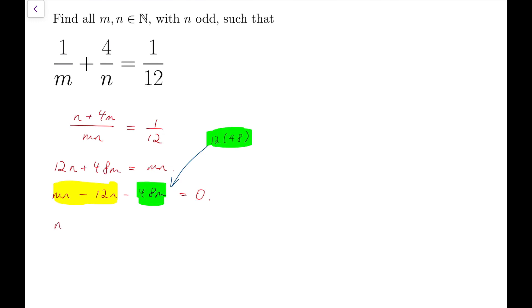Then the yellow group will become n times n minus 12, while the green group will become minus 48 times n minus 12. Of course, the right-hand side is now 12 times 48, which is 576.